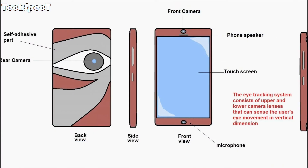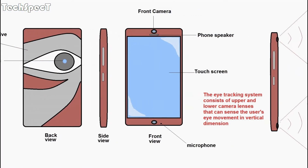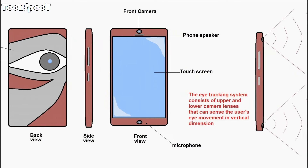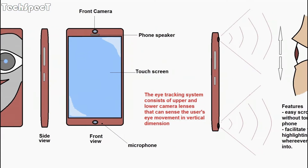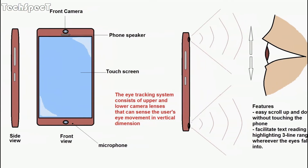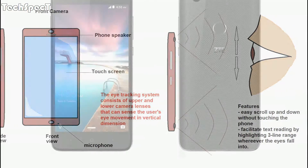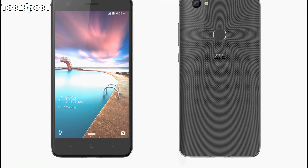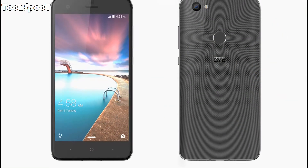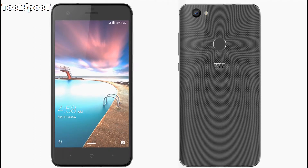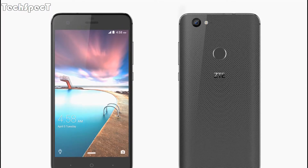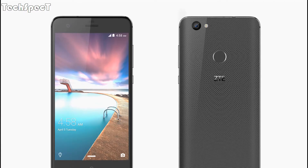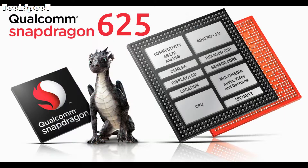Display type: IPS LCD capacitive touchscreen, 16M colors. Size: 5.5 inches, approximately 71.3% screen-to-body ratio. Resolution: 1080 x 1920 pixels, approximately 401 pixels per inch pixel density.